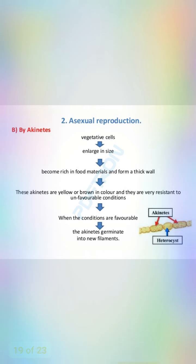In akinetes, a vegetative cell enlarges in size, becomes rich in food material, and forms a thick wall. These akinetes are yellow or brown in color and are very resistant to unfavorable conditions. When conditions become favorable, the akinetes germinate into a new filament, as seen in the diagram.